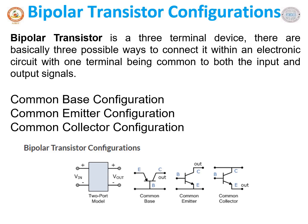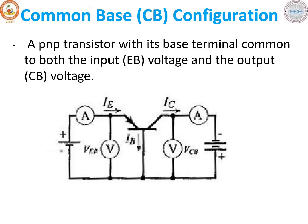Hello everyone. Last class we covered the basics of BJT transistors. In this video, let us learn about bipolar transistor configurations. A BJT can be connected in three different configurations: common base, common emitter, and common collector. We will start with the common base configuration.